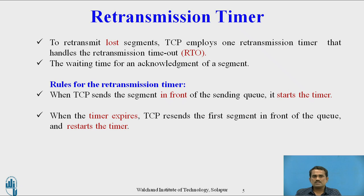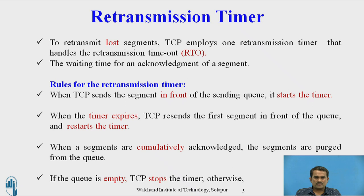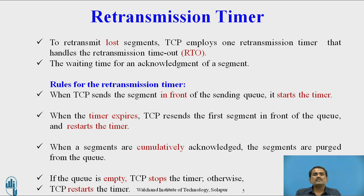The second rule is: when the timer expires, TCP resends the first segment from the front of the queue and restarts the timer. When segments are cumulatively acknowledged, they are purged from the queue. The last rule is: if the queue is empty, TCP stops the timer; otherwise, TCP restarts the timer. These are the different rules for how to use the retransmission timer.